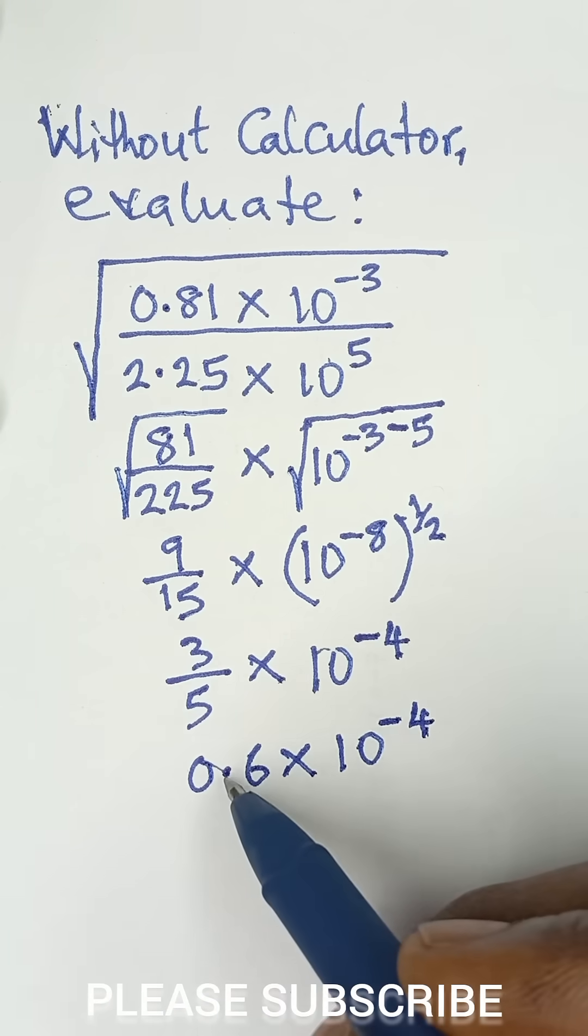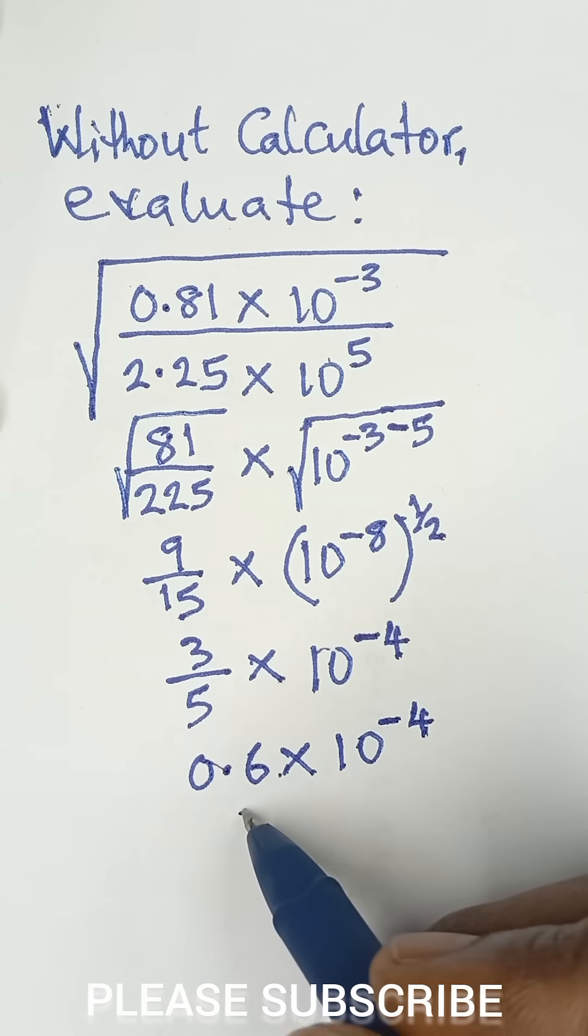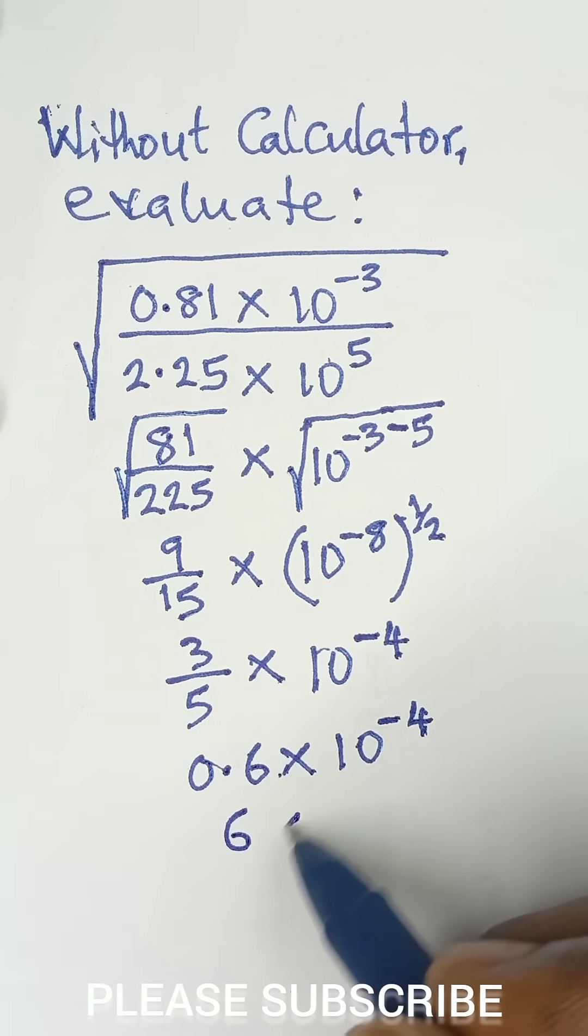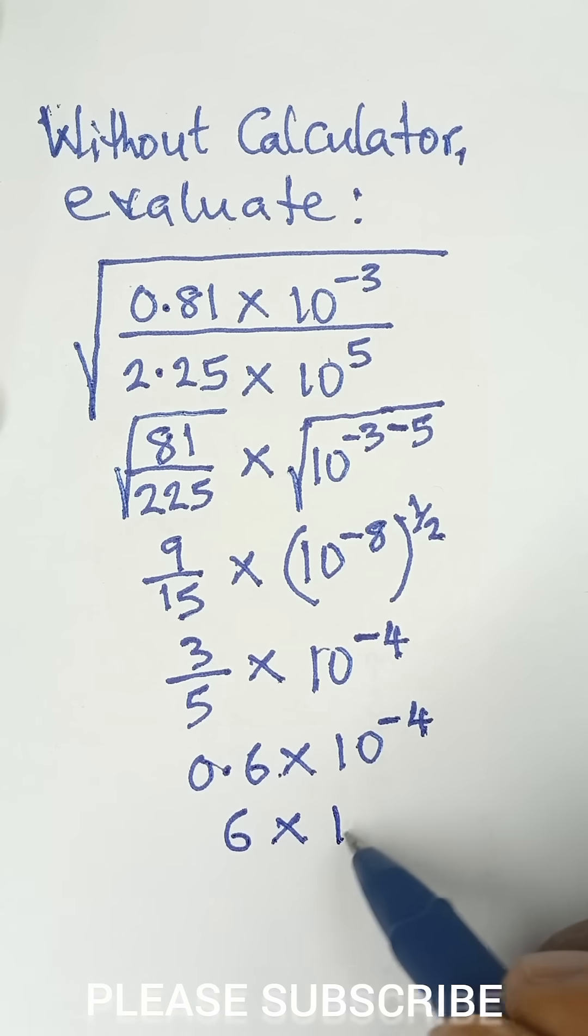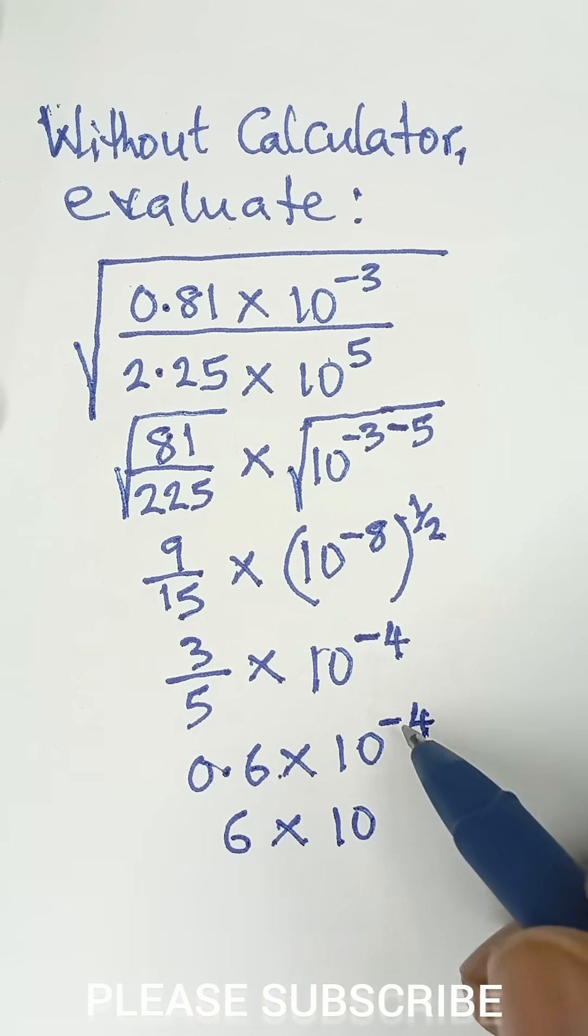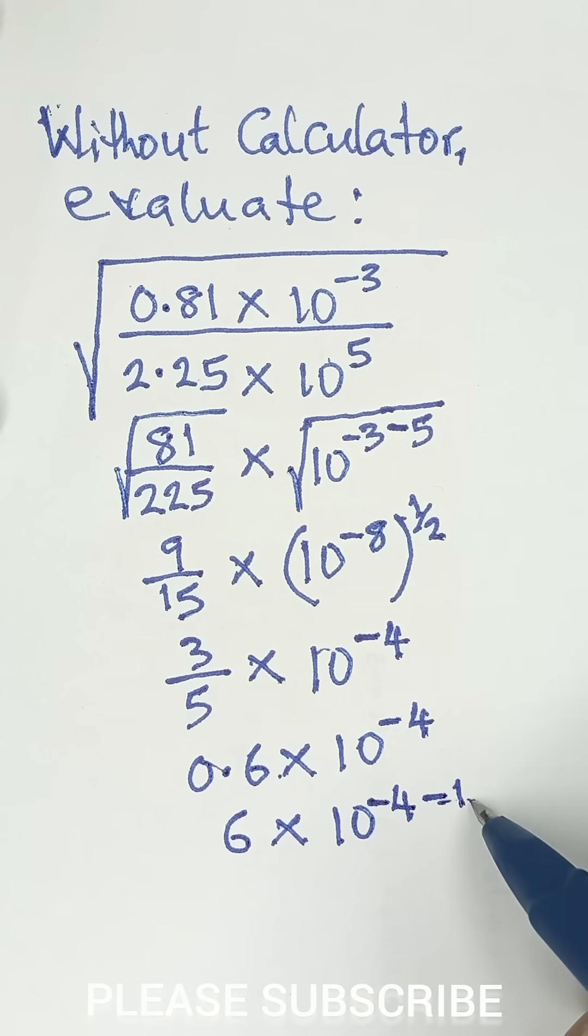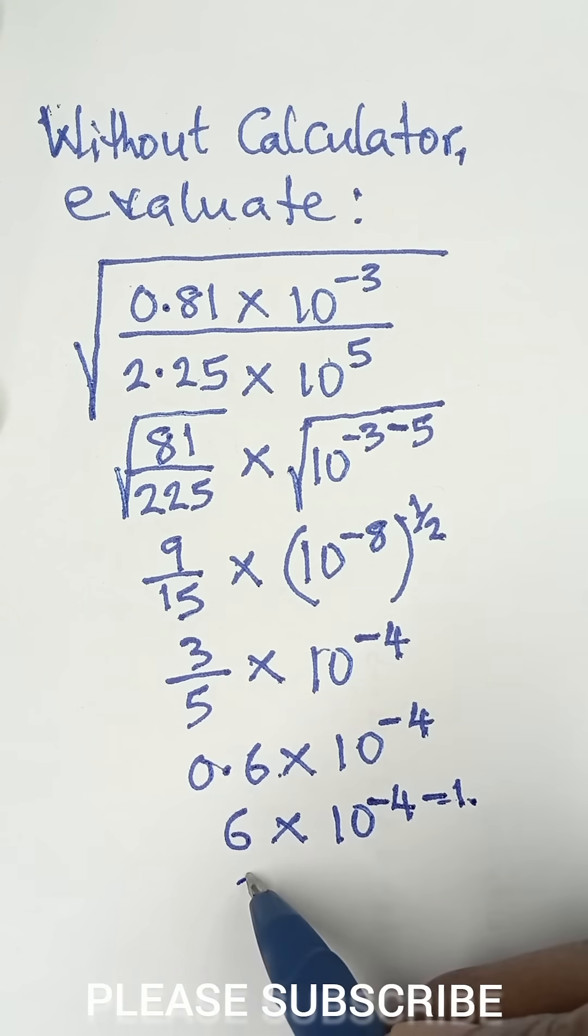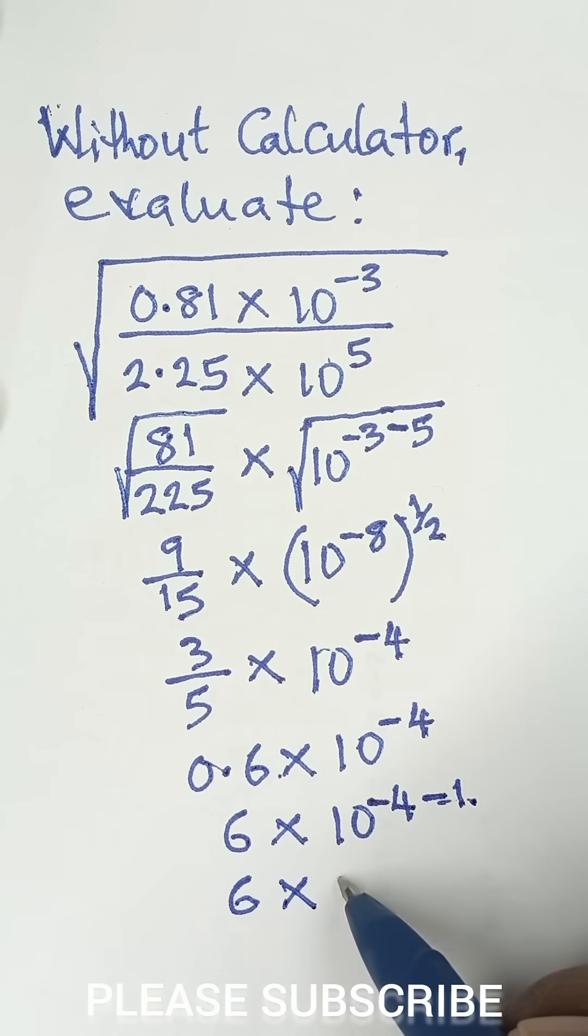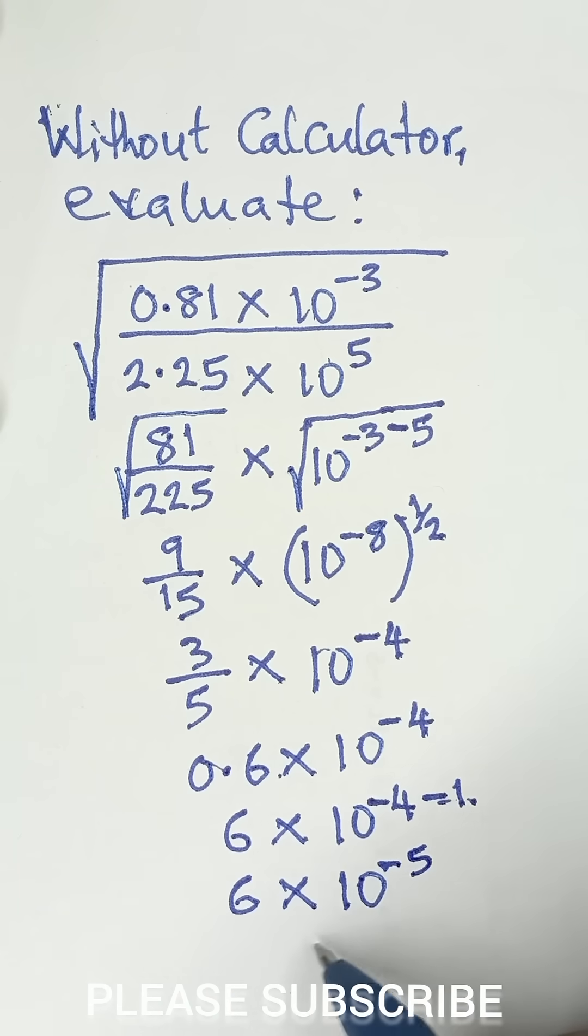And now for us to move this decimal point once to the right hand side so that this becomes a whole number, we need to do something to the power of this. So when we move decimal point to the right once, we have to subtract 1 from that power because we are moving it once, so we say minus 1.